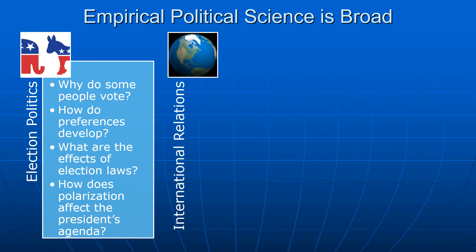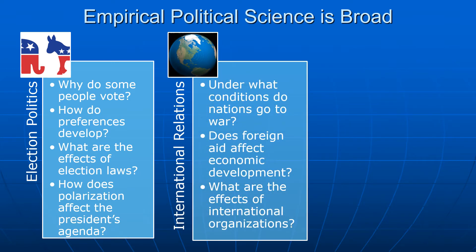Another area of political science that's really common is international relations, and this deals with politics in the international and global sphere. Research in this area might ask: under what conditions do nations go to war? We could look at the measures related to international conflict, conflict between nations. And of course, one of the key questions here is what is war? How do we actually define war? Is it merely the formal declaration of war, or is it an actual armed conflict? And if it's actual armed conflict, how much conflict is necessary for a conflict to be classified as a war as opposed to an insurgency or a mere conflict or border clash?